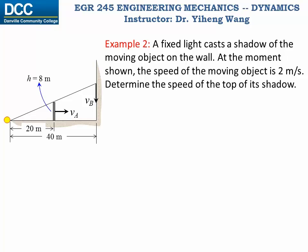Here is a different type of problem that also involves dependent motion. There is a plate with height of eight meter moving towards the wall, and a fixed light source casts its shadow on the wall. Obviously when the object moves, the top of its shadow moves as well. We know that at this instant the speed of the moving object is 2 meter per second, and we need to find the speed of the top of its shadow.